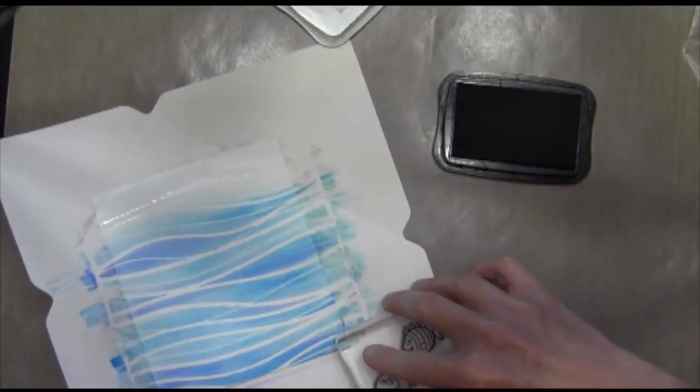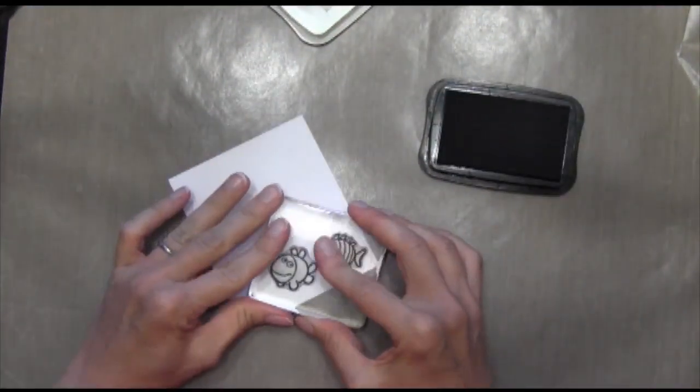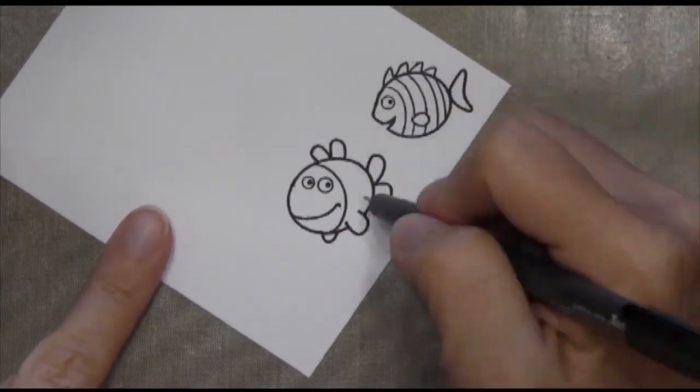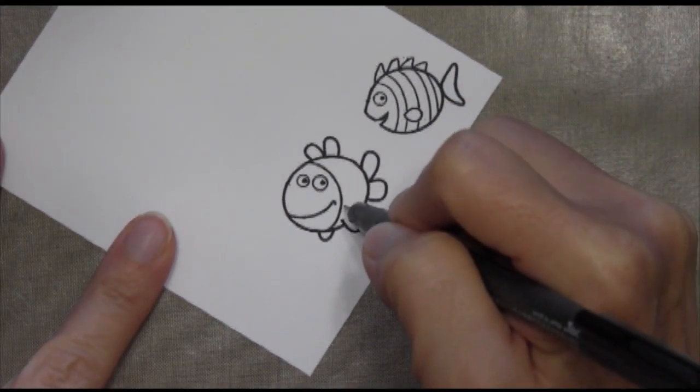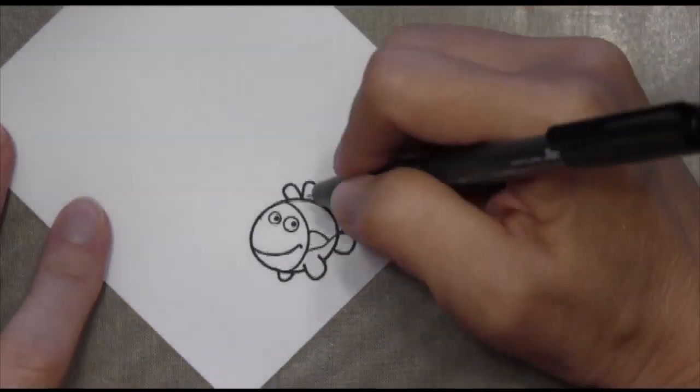Now I've got the two fish. I'm using some memento tuxedo black ink. And you can see I stamped it off on that scratch cardstock. And I find that I always get a better image the second time around. So I went ahead and stamped it first before I stamped it on my Neenah Solar White cardstock.